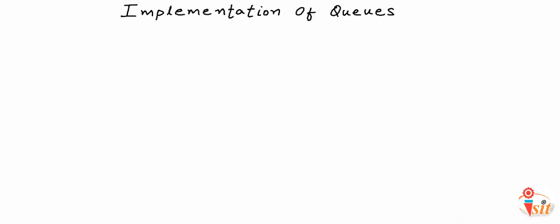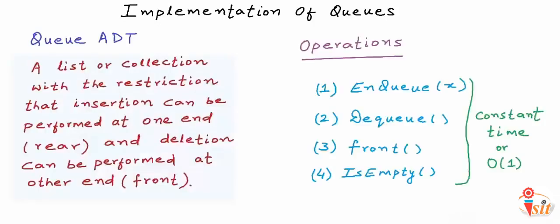In our previous lesson, we introduced you to the Queue data structure. We talked about Queue as an abstract data type or ADT. When we talk about a data structure as an abstract data type, we define it as a mathematical or logical model. We define only the features or operations available with the data structure and do not go into implementation details.